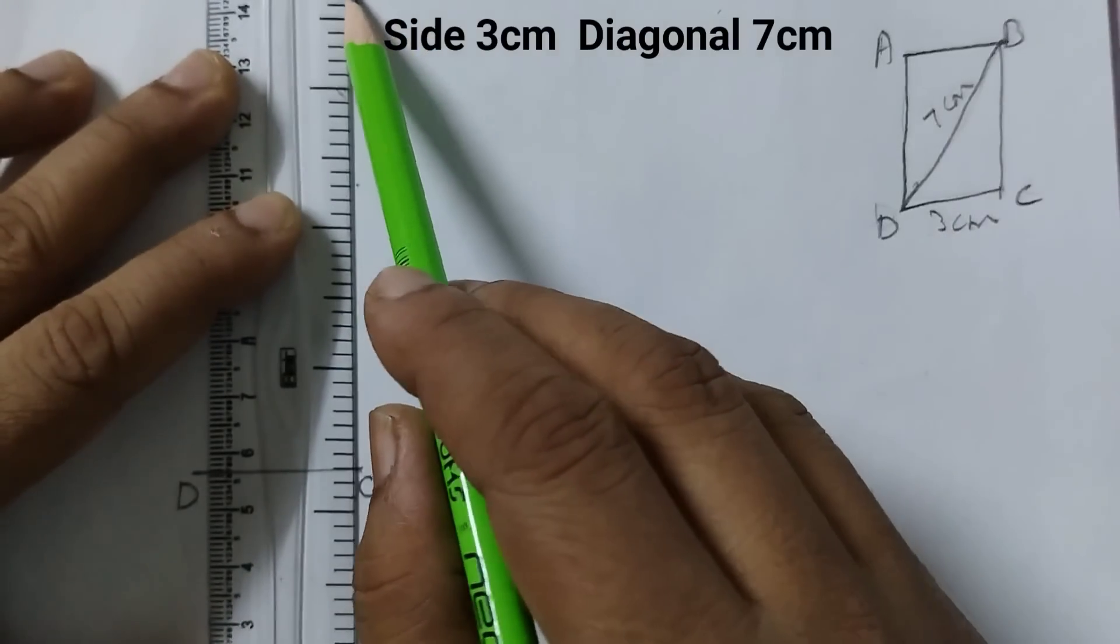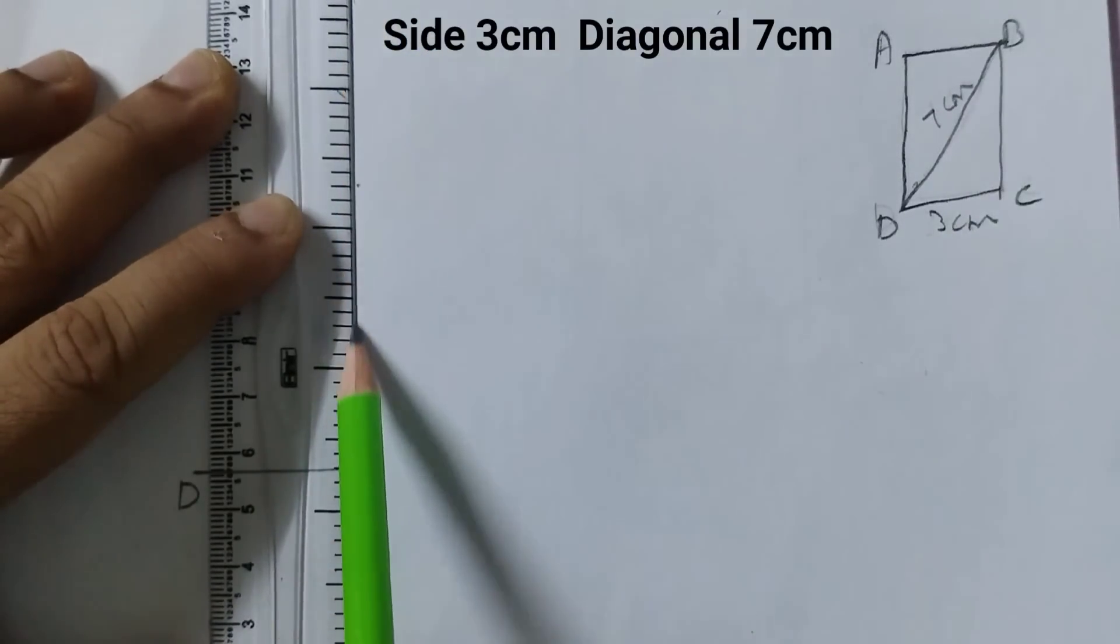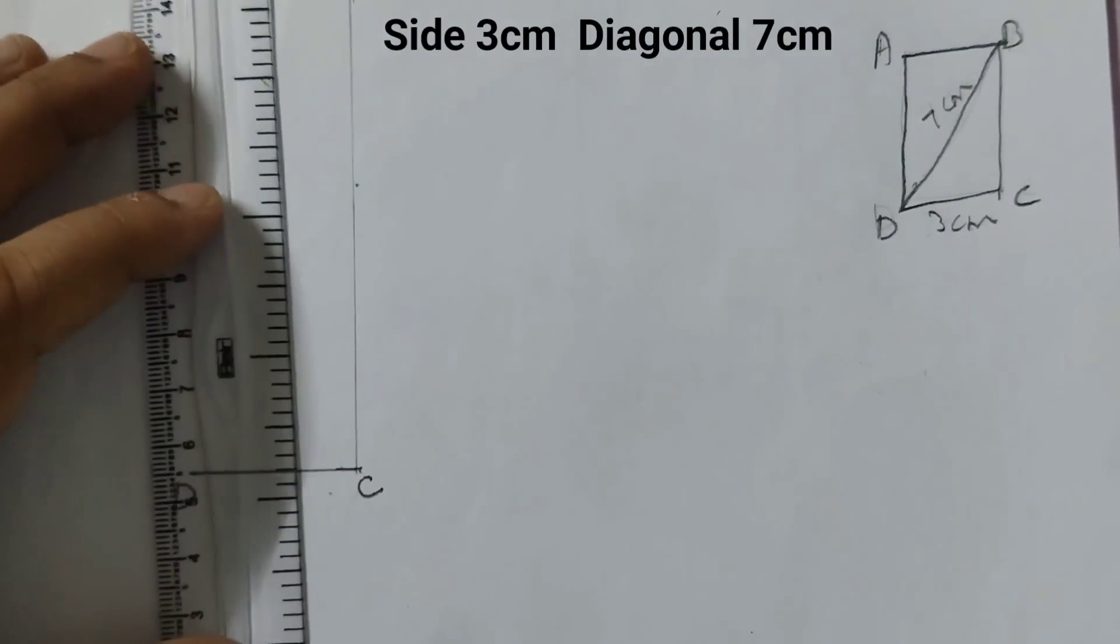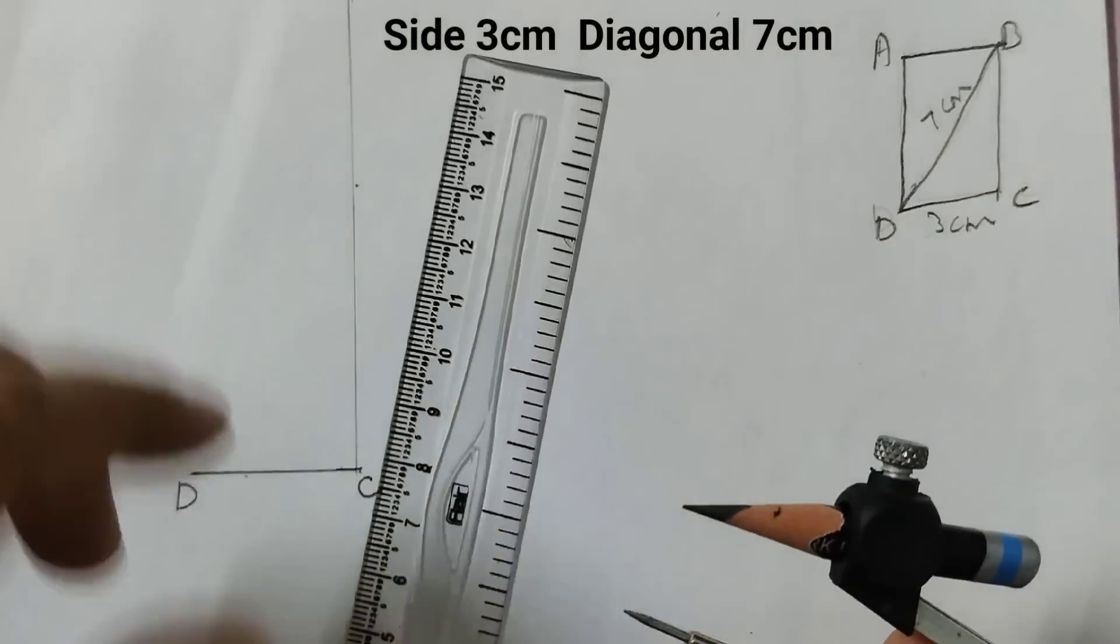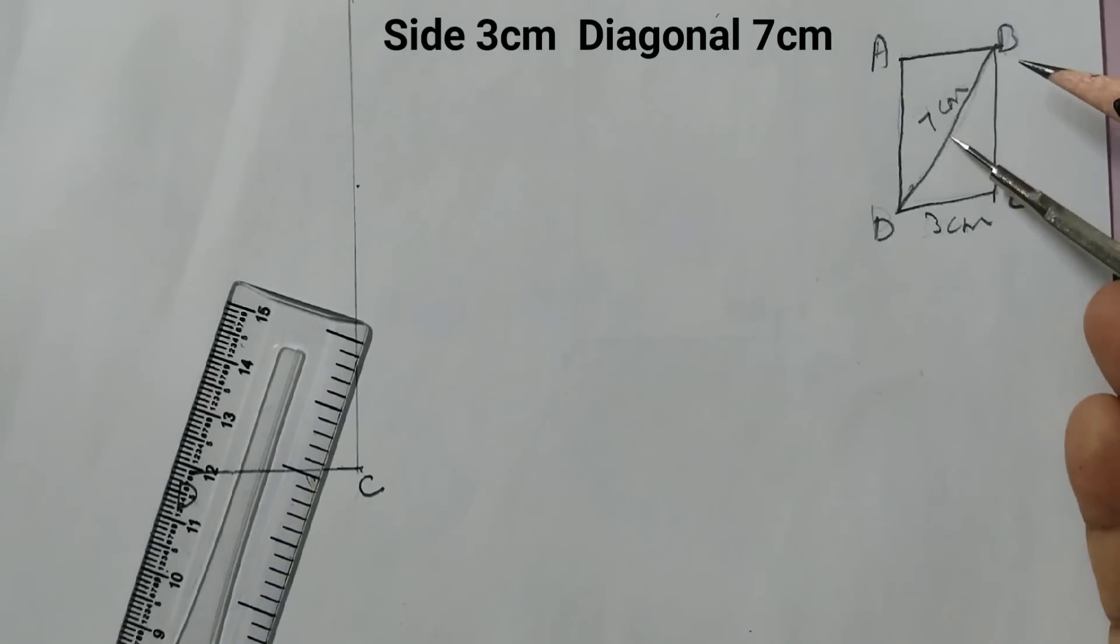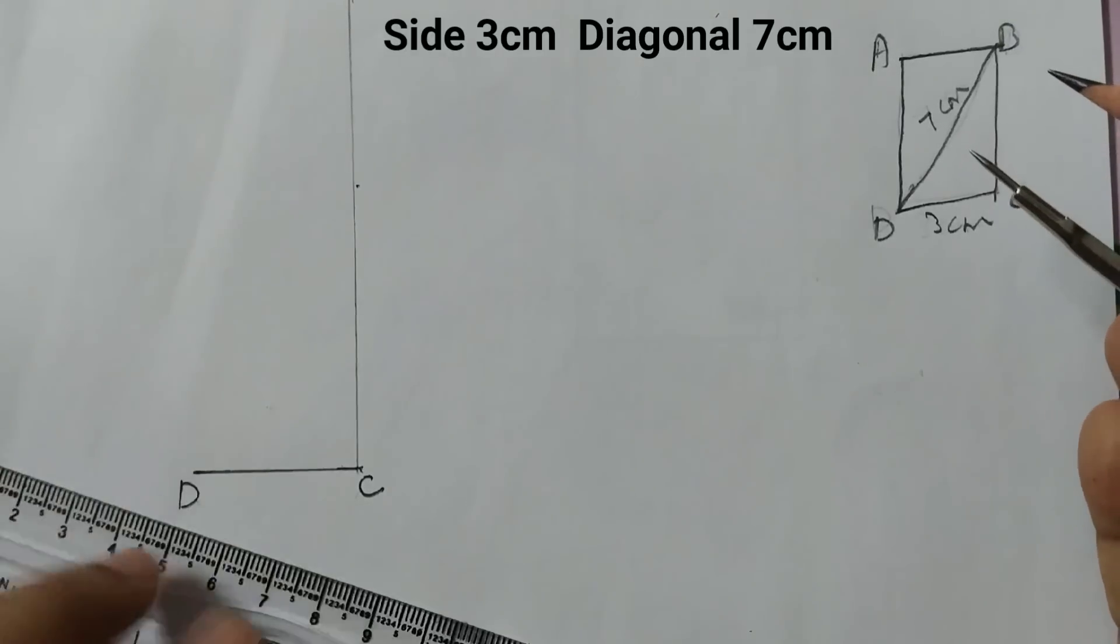So we will draw a light one. This is a 90 degrees angle. Now we will take the compass and here we need to draw this diagonal which is 7 cm.